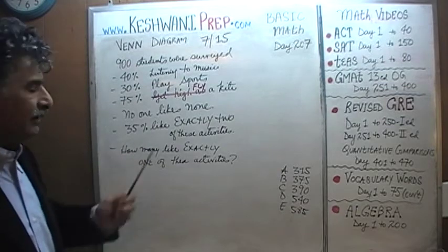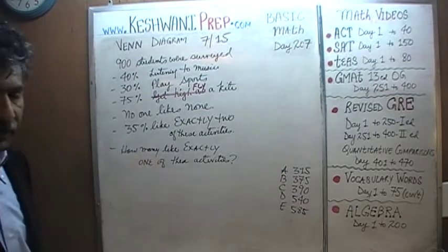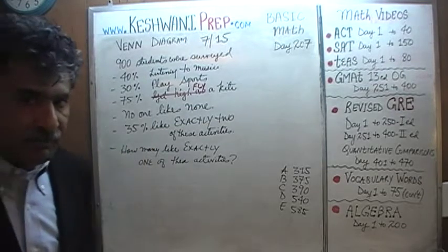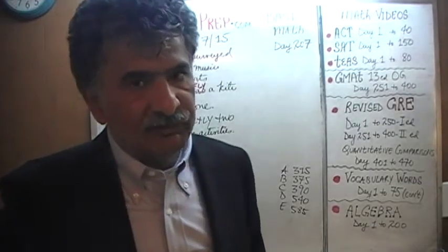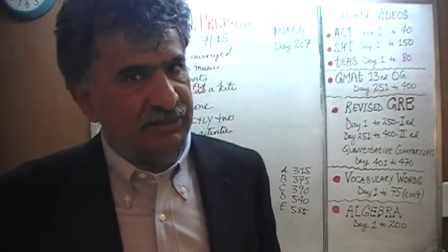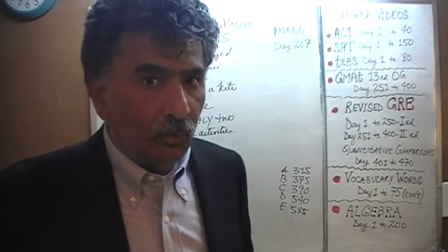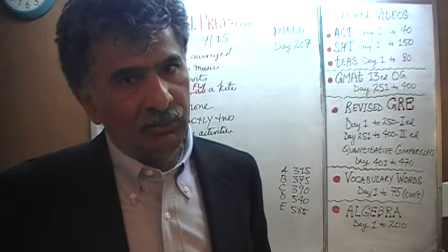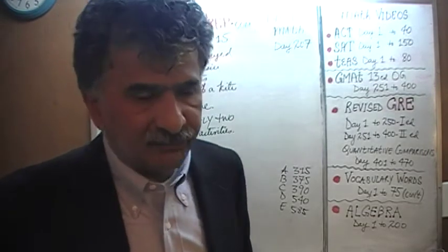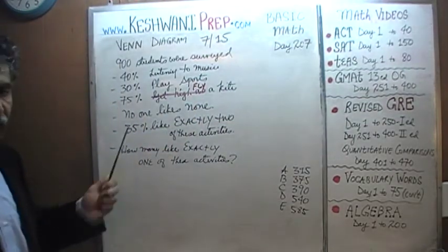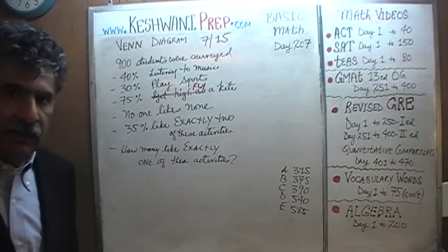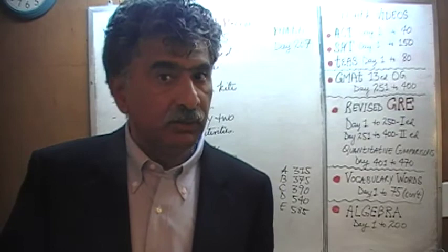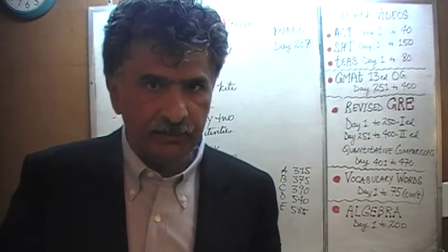Furthermore, we are told that no one likes none — this is a very important sentence. It means that everybody, all 900 of the students, said that they like at least one of these three activities: listening to music, playing sports, or flying a kite.